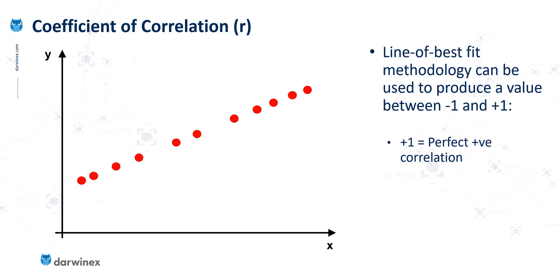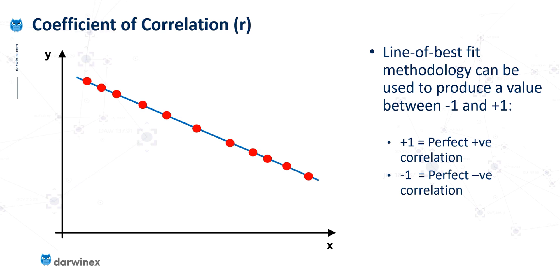The range of values goes from minus 1 up to plus 1, where plus 1 represents a perfect positive correlation. What that means is that as one variable increases, so does the other, giving us a positive gradient where each of the dots lies perfectly on that line. The opposite of this is again a perfect relationship, but this time as one variable increases, the other decreases — giving us a negative gradient which results in a correlation value of minus 1.